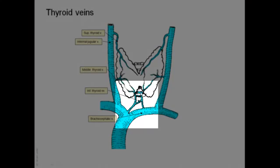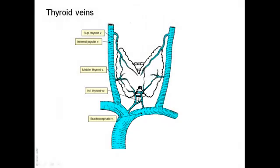The inferior thyroid vein, or veins, form a plexus, drain the inferior aspect of the gland, and pass in front of the trachea. They usually drain into the left brachiocephalic vein, because the left brachiocephalic vein crosses the midline from left to right to join the right brachiocephalic and form the superior vena cava. Although there is an inferior thyroid artery, it does not accompany the vein — the artery is located more laterally.